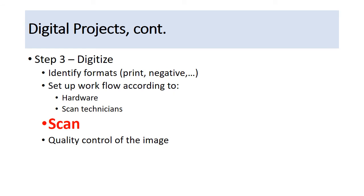Step three — this is the one people think of — this is when we digitize things. First, we identify the formats: whether they're a photographic print, a negative, a 35mm transparency. We set up workflows according to the hardware needed for those formats and the scan technicians we have. Our hardware consists of several scanners — a larger tabletop scanner and a large format freestanding scanner. Our scan technicians are our student employees. We have a digital lab manager who specializes in digitization and supervises our student employees, who do a large portion of our scanning. We could not do the projects we've done without our student workers.